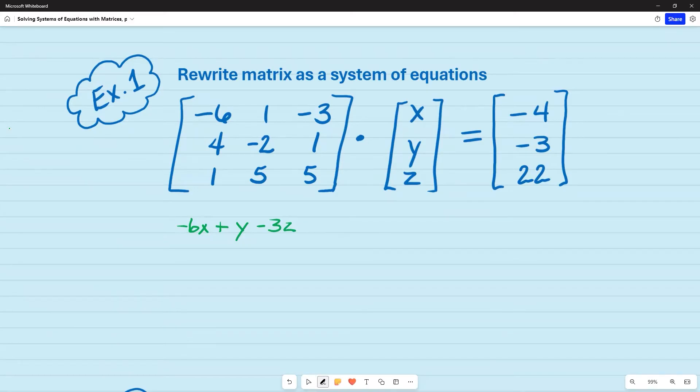Then I'm going to do the same thing for the second row. So what I'm doing is I'm taking this row and multiplying it times this column. And so I'm taking the first and the first. So that's going to give me four x. Then I'm going to the second element and the second element. And once I multiply those, that's going to give me negative two y.